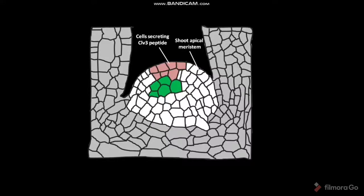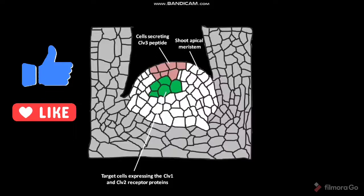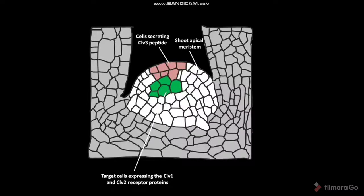These green colored target cells are expressing the Clv1 and Clv2 receptor proteins. The Clv3 peptide binds to the Clv1 or Clv2 receptor protein on the target cell. This binding stimulates the differentiation of the target cell.